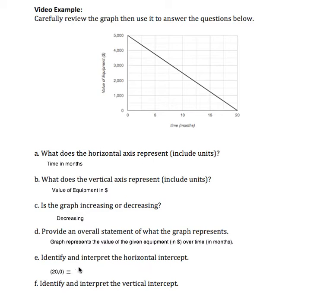I'm going to say time equals 20 and value equals 0 dollars. So 20 months, 0 dollars.